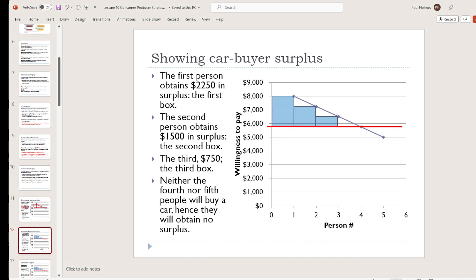Here's a version that looks a little bit prettier. $2,250 for the first person, that's their surplus, the difference between the amount they would have been willing to pay and the amount they actually have to pay, and then multiplied by one to give us this area to represent their surplus. Second person, $1,500. Their willingness to pay was $7,250. They actually paid $5,750. They get $1,500 in surplus. Third person is $750.